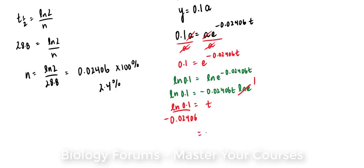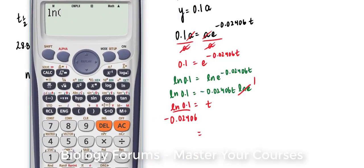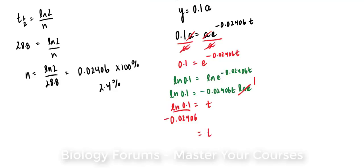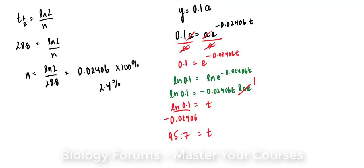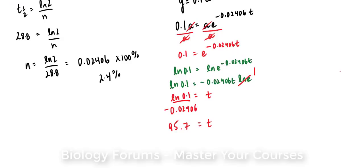Now we will use our calculator to find out what our t value is. ln 0.1 divided by negative 0.02406 equals 95.7. And given that we've been using years here, we'll say that this is 95.7 years.